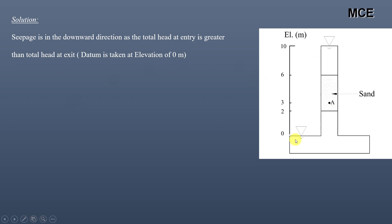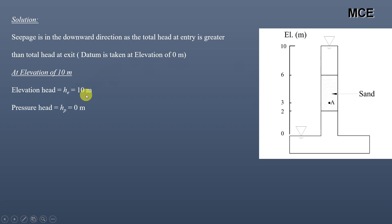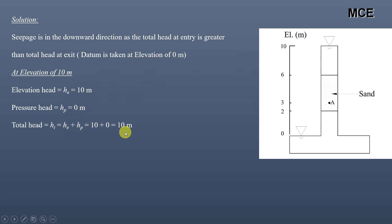We take a datum at the elevation of 0 meters. At the elevation of 10 meters, the elevation head is 10 meters and the pressure head is 0 meters, because the water here is in contact with atmospheric pressure. Total head, which is elevation head plus pressure head, is 10 plus 0, which equals 10 meters.